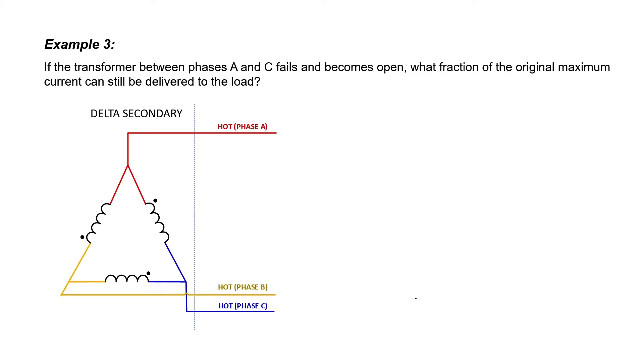with a delta connected transformer, it still works if one of the three transformers in the bank fails. That's what we're going to look at here in this particular example. Let's assume that the transformer here between phases A and C fails and becomes open.